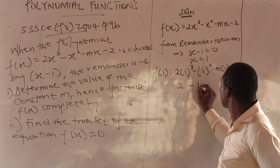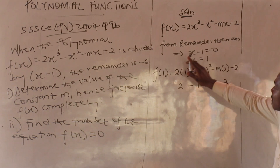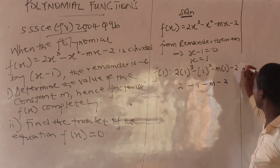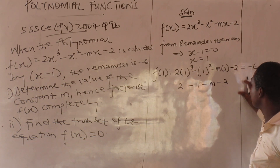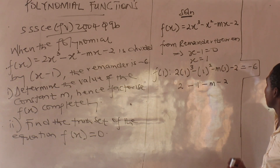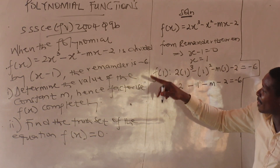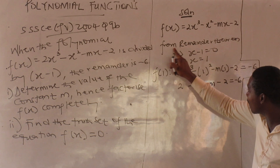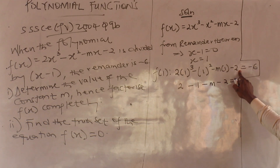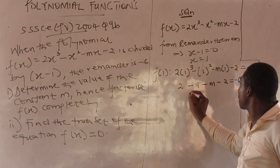So we get: minus two, minus one, minus one, minus one... They said when f(x) is divided by (x minus 1), the remainder is minus 6. So everything equals minus 6. That is what it means — when you divide by that factor, the remainder should be minus 6.